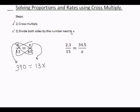Step number two, divide both sides by the number next to x. The number next to x is 13, so I'm going to divide both sides by 13. 13 divided by 13 is 1x. Another way of saying 1x is just x.